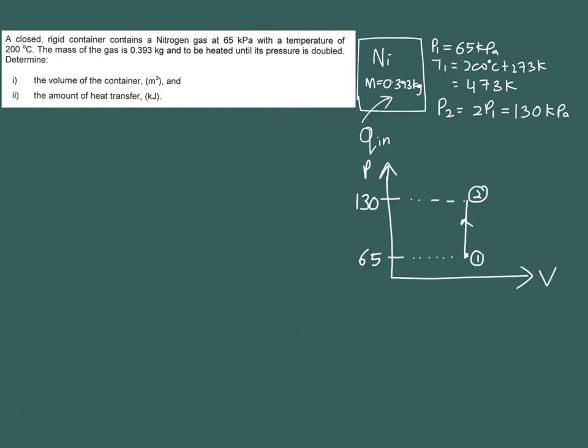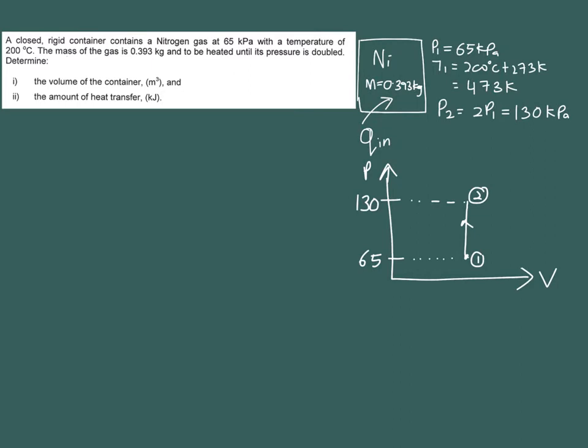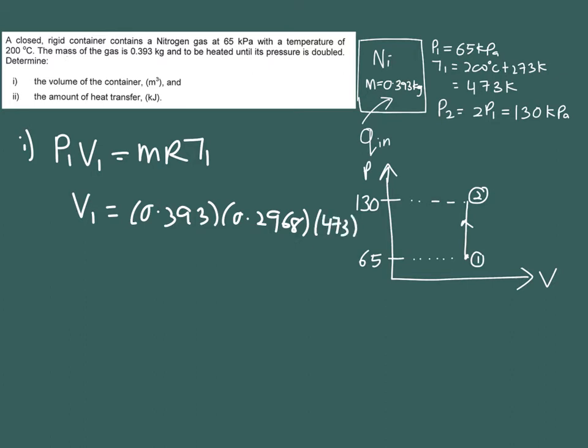All right, so let us solve for the first part right. So you have P1V1 is equal to mRT1 and given that your ideal gas is nitrogen so your R is 0.2968. So your mass is 0.393 times your R is 0.2968 and times your temperature here which is 473 over with your pressure at 65 kilopascal. So you got your V1 equal to 0.849 meter cube.